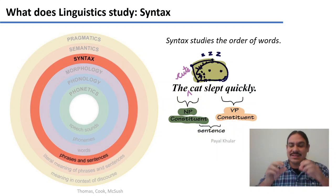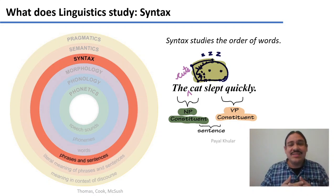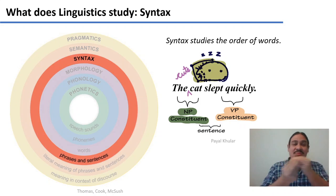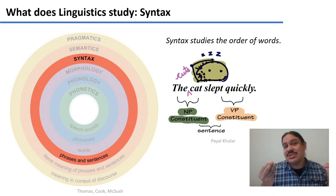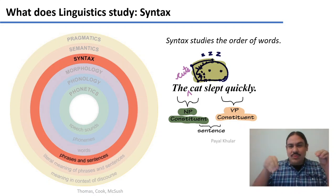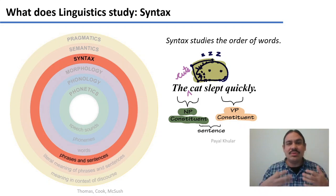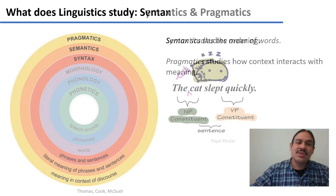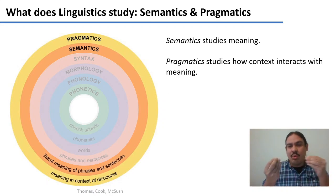Syntax deals with the order of words once they are formed. For example, in English, the sentence 'the cat slept quickly' is a fine English sentence. But if I had 'slept quickly cat the,' it's the same words but now jumbled — so jumbled that the meaning is impossible to grasp. Syntax studies the ordering of words so that your brain can compute the meaning, and languages have specific rules for how words should be ordered. So morphology and syntax study words and the order of words.